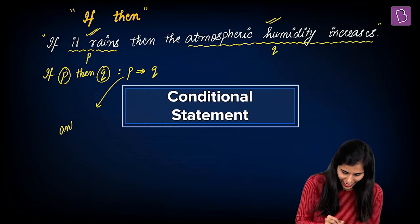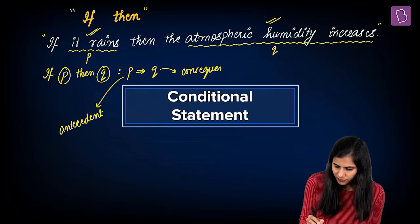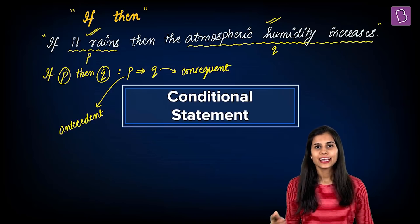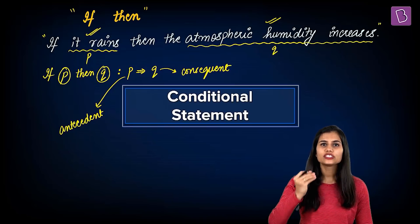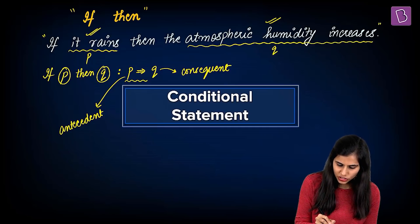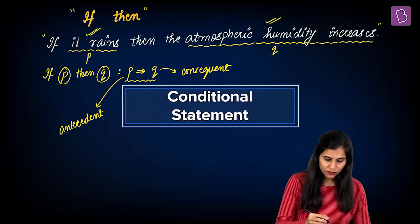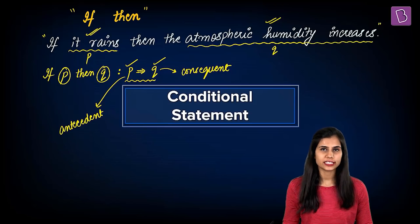Here, P is called the antecedent and Q is called the consequent. Our aim is to understand how the truth value of a conditional statement is impacted by the truth value of its respective component statements.